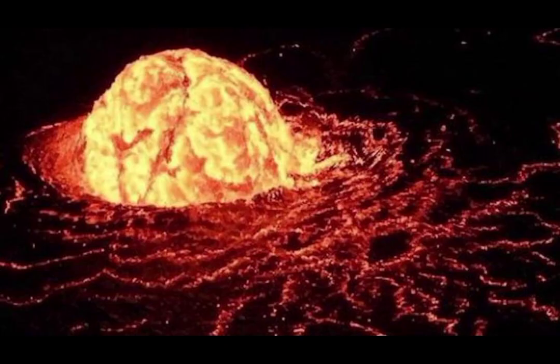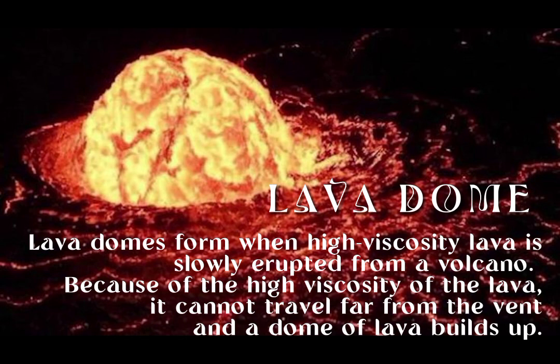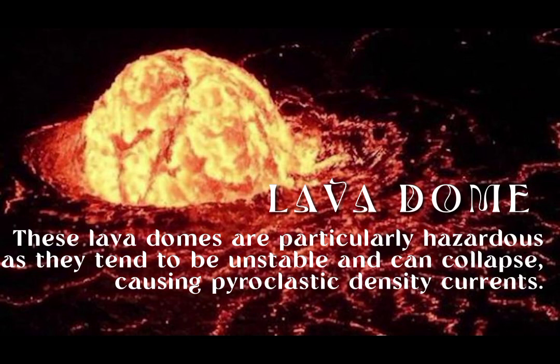Lava domes form when high viscosity lava is slowly erupted from a volcano. Because of the high viscosity of the lava, it cannot travel far from the vent and the dome of lava builds up. These lava domes are particularly hazardous, as they tend to be unstable and can collapse, causing pyroclastic density currents.